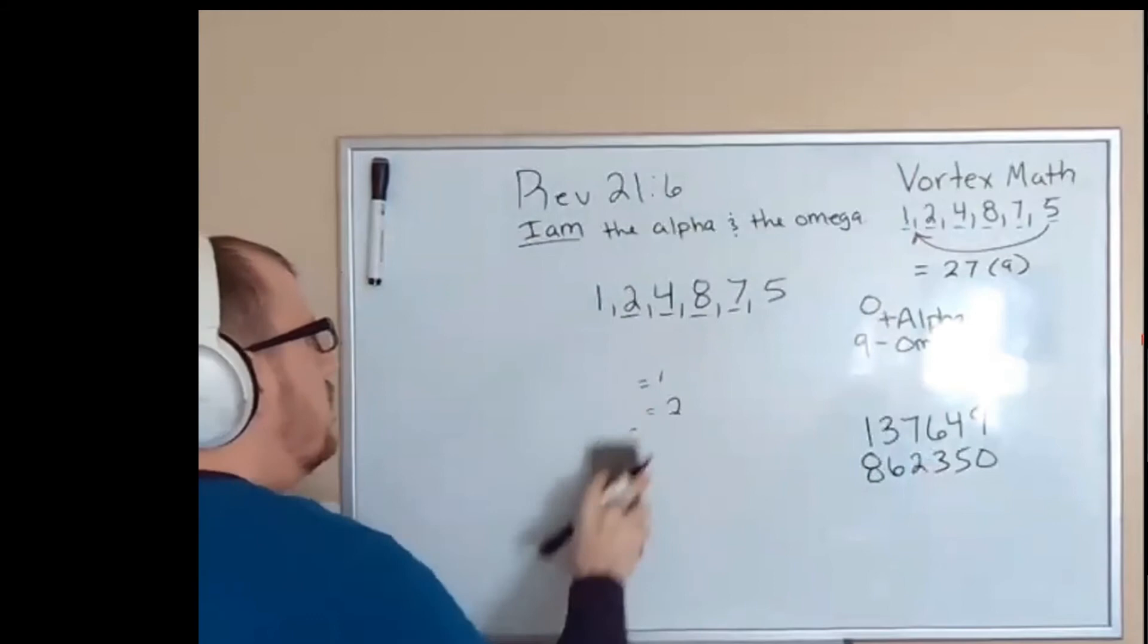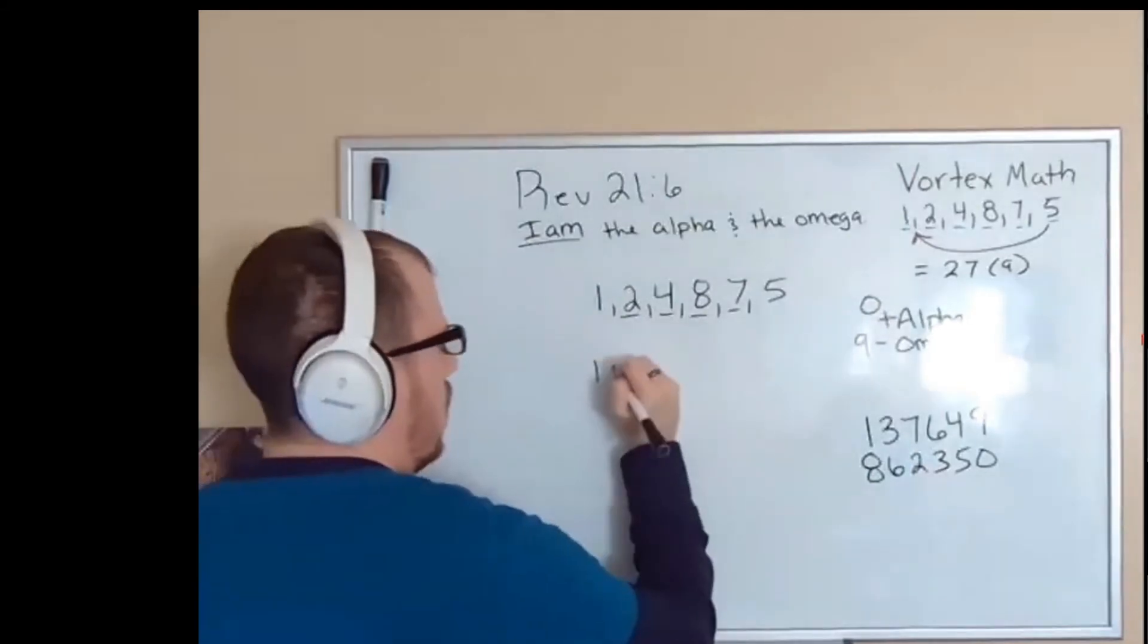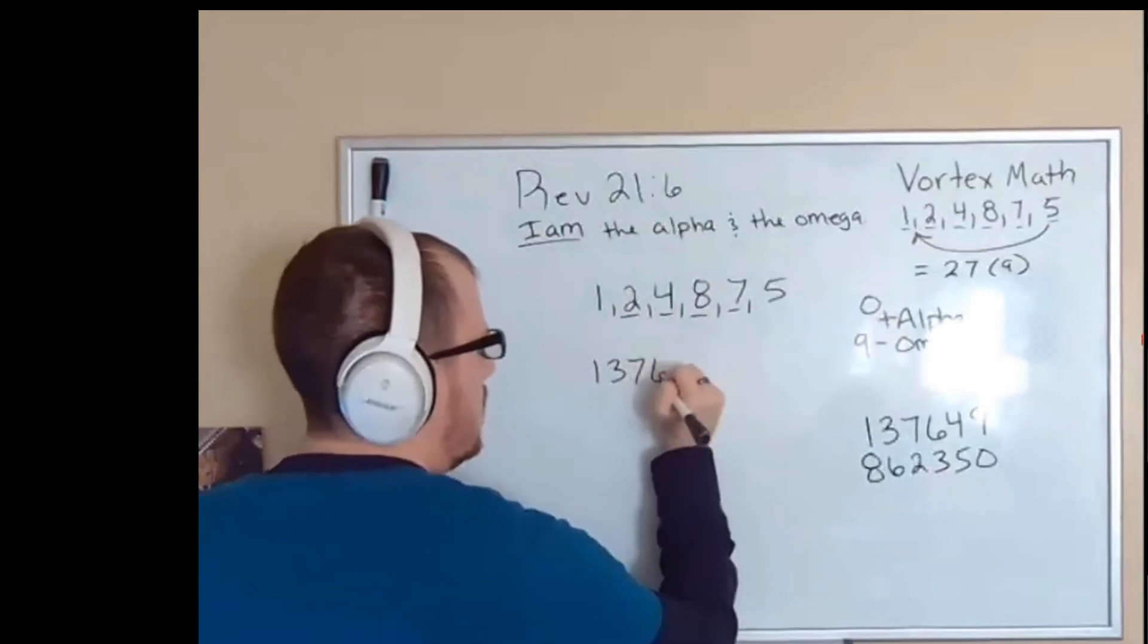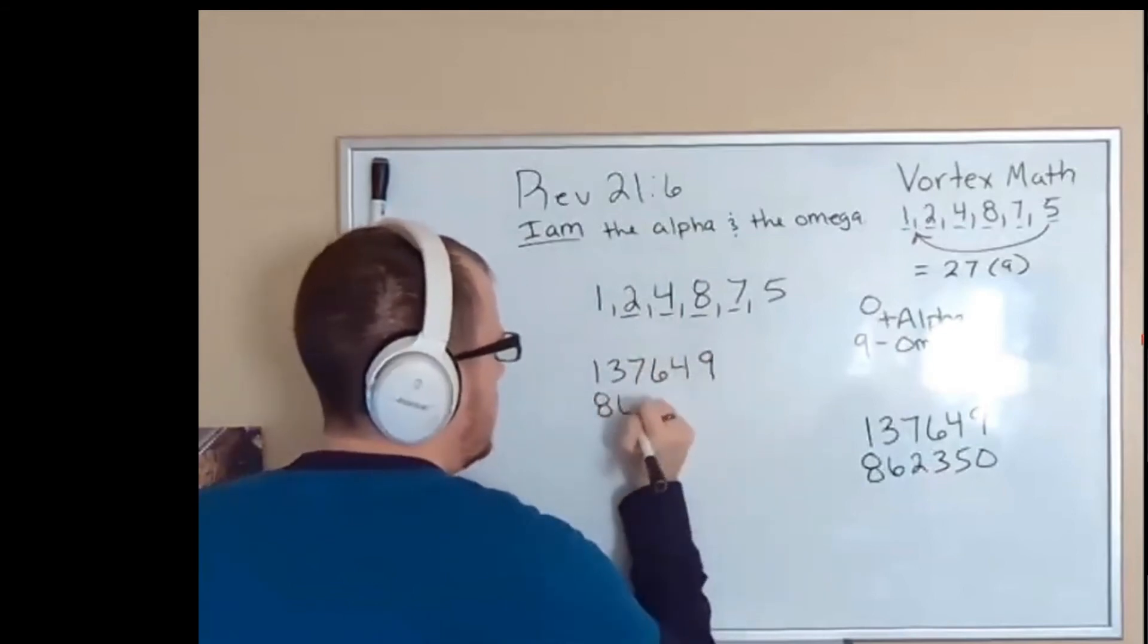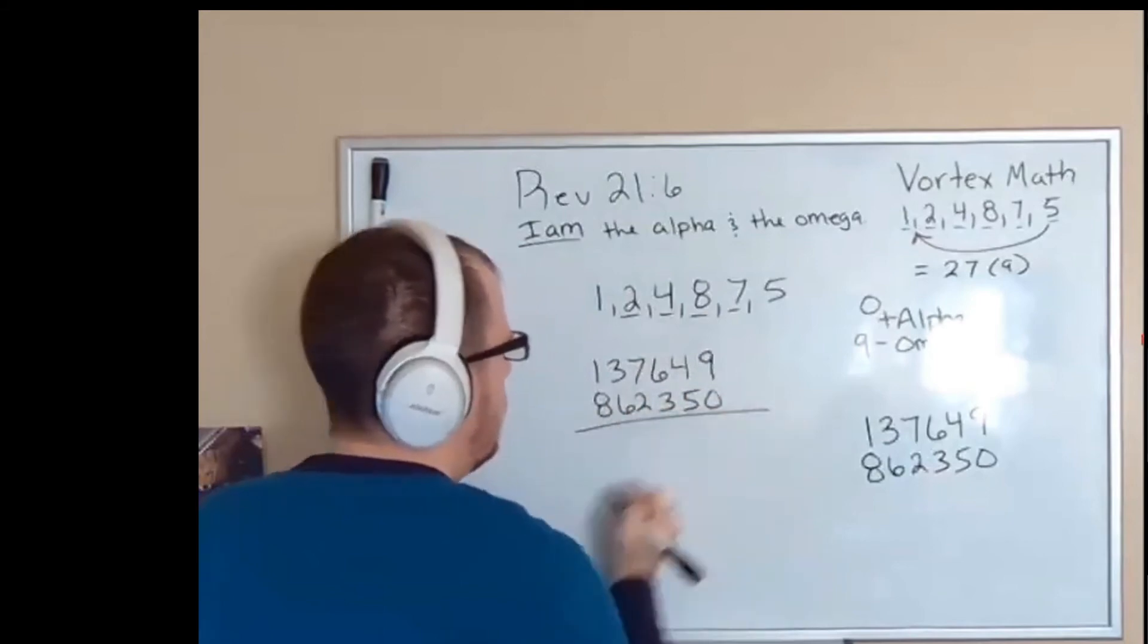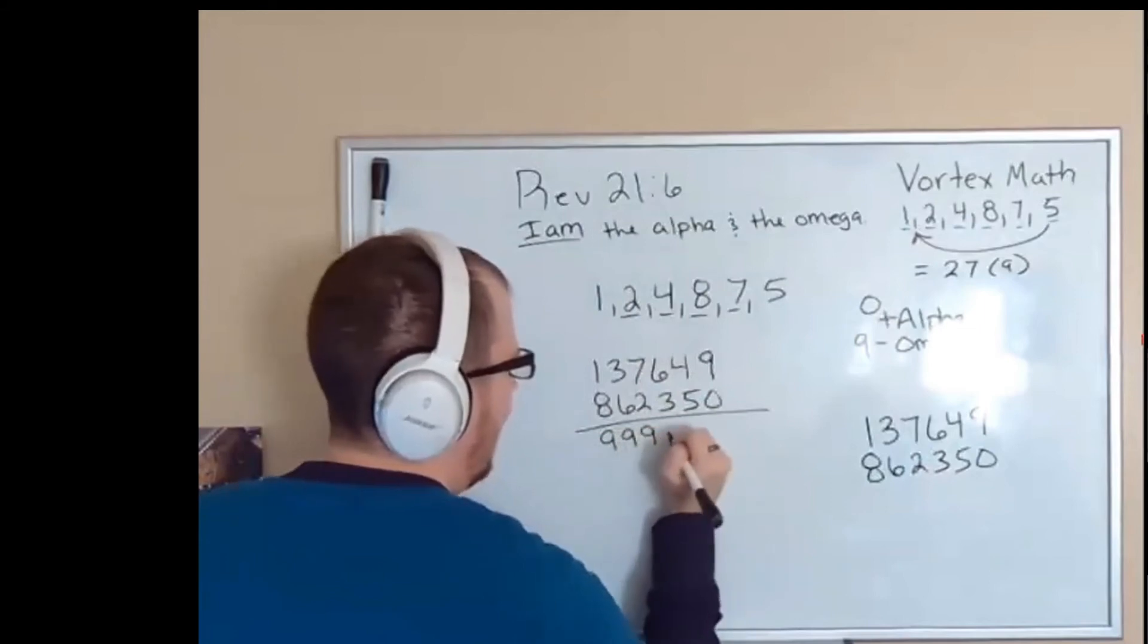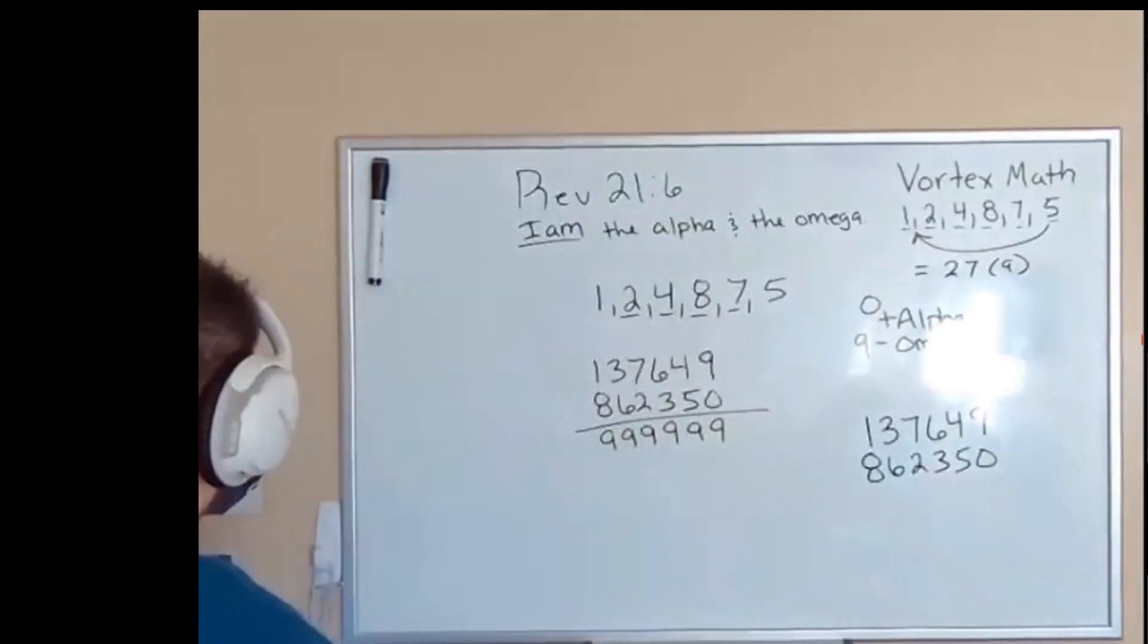When you take the alpha and the omega: one, three, seven, six, four, nine, and eight, six, two, three, five, zero, and you add them up, you have nine, nine, nine, nine, nine, and nine.